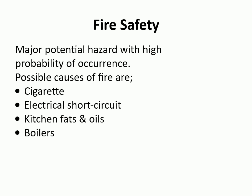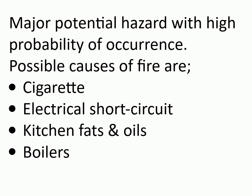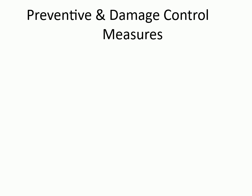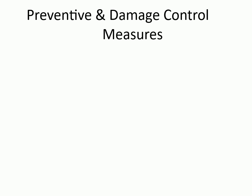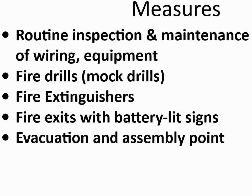Fire safety is a major potential hazard with high probability of occurrence. Possible causes of fire are cigarette, electrical short circuit, kitchen fats and oils, and boilers. Preventive and damage control measures include: smoke detectors, fire alarm, ceiling water sprinkler, fire blankets, fire hose reels, signage, instructions, and first aid kits. Additional measures: routine inspection and maintenance of wiring and equipment, fire drills and mock drills, fire extinguishers, fire exits with battery-lit signs, and evacuation and assembly point.